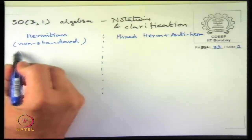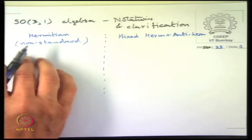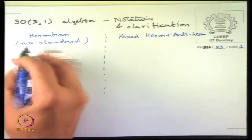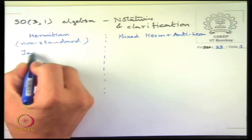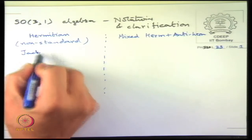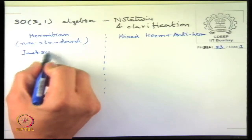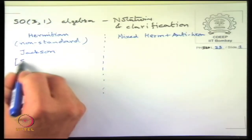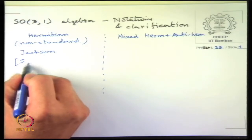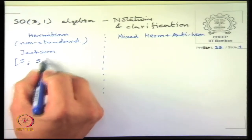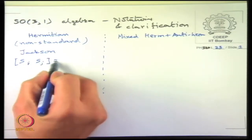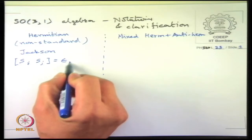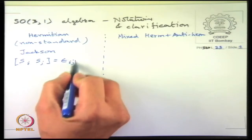Let me quote Jackson because that is a standard textbook and even if I have made various errors of sign, I do not think there will be errors there. Jackson's convention is that with everything real — S_i, S_j equal to epsilon — everything is real here, so there are no i's at all.